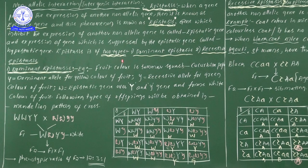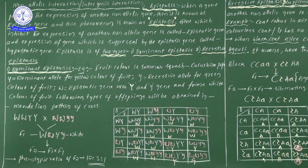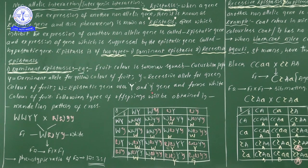So here, following types of offspring will be obtained in Mendelian patterns of cross. In this particular table, a dihybrid cross has been taken. Capital W, W with capital Y, Y — where capital W is the epistatic gene showing dominance over capital Y and small y.